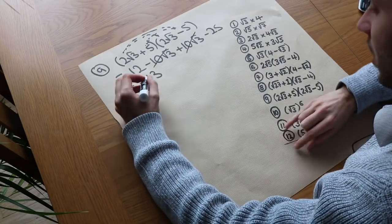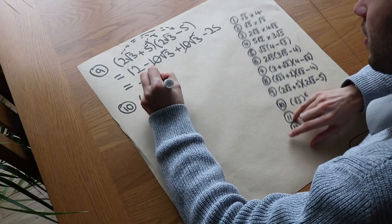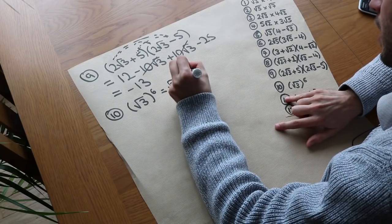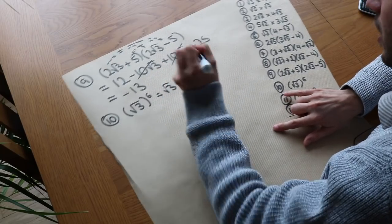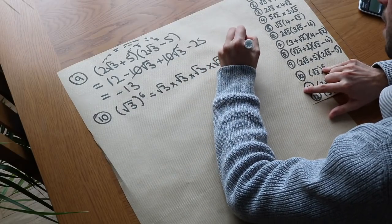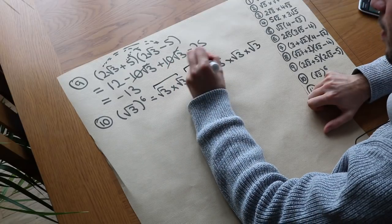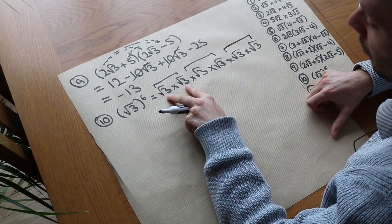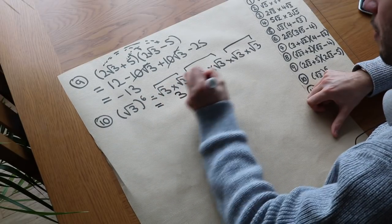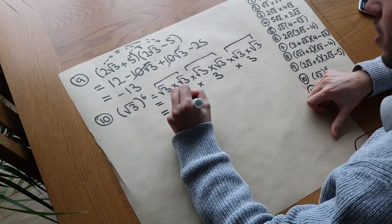What about question 10? We've got (root 3) to the power of 6. Well that's root 3 times root 3 times root 3 times root 3 times root 3 times root 3. Each pair of root 3s combines to make 3, because root 3 times root 3 is 3. So we just end up with 3 times 3 times 3, and that's going to be 27.